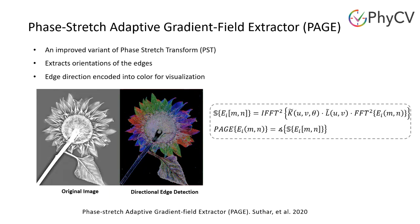PAGE, Phase Stretch Adaptive Gradient-field Extractor, is an improved variant of PST which detects directional edges. Metaphorically speaking, PAGE emulates the physics of birefringent diffractive propagation that is orientation dependent. The directional edge detection gives PAGE the ability to pick out the structural details from images in a way that PST cannot.